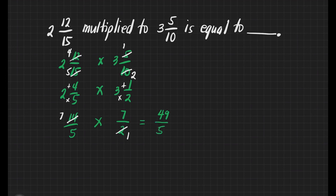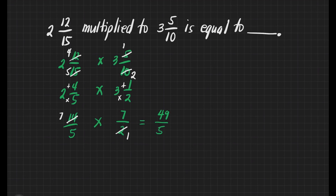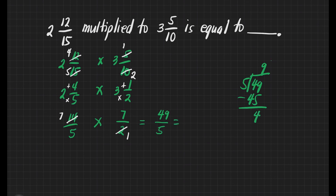49 over 5 is not yet the final answer because it is an improper fraction. We need to change it to a mixed number. 49 divided by 5: how many 5s are there in 49? That's 9. 9 times 5 is equal to 45. 49 minus 45 is 4. So 9 is our whole number, 4 is our numerator, and 5 is our denominator. Therefore, 2 and 12 fifteens multiplied by 3 and 5 tenths is equal to 9 and 4 fifths.